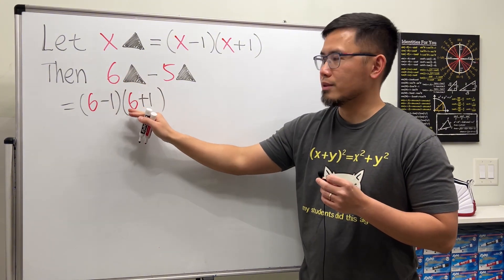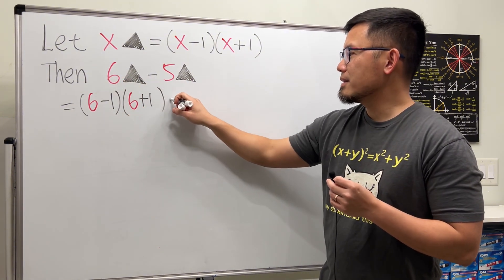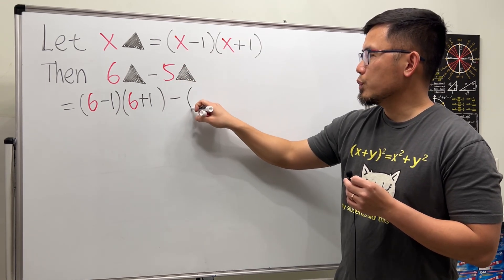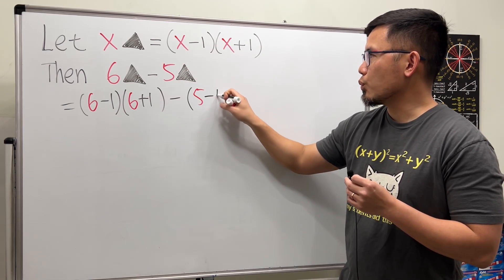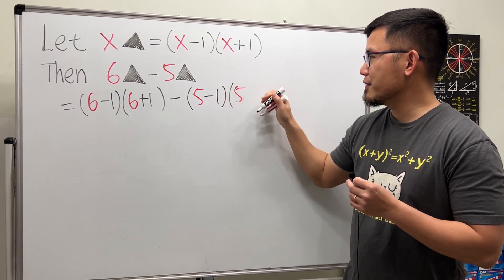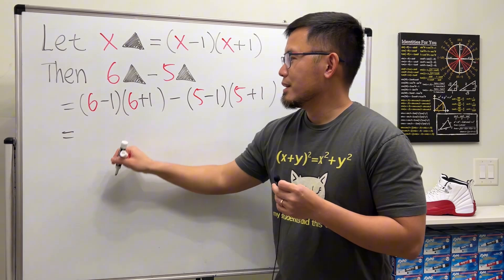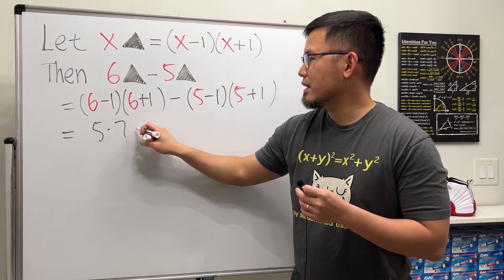This is 6 triangle, and then minus 5 triangle. You just put 5 into here and here, so we get 5 minus 1 times 5 plus 1.